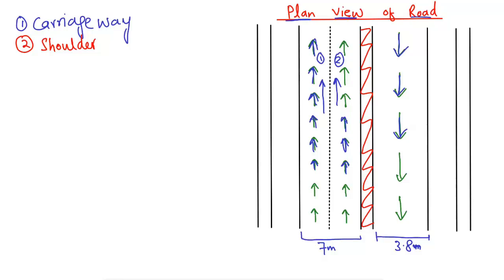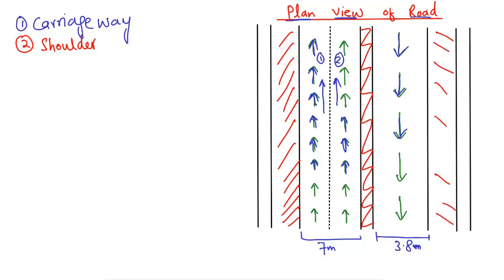The shoulder is an important component of the road located next to the carriageway. I have represented the shoulder here with red diagonal lines — there is one shoulder on each side. The shoulder is provided so that a vehicle can stop in emergency cases. For example, if a vehicle is moving and there is an emergency, it can pull over to the shoulder and stop. The main purpose of the shoulder is to bring the vehicle to a stop in emergency or accidental situations.